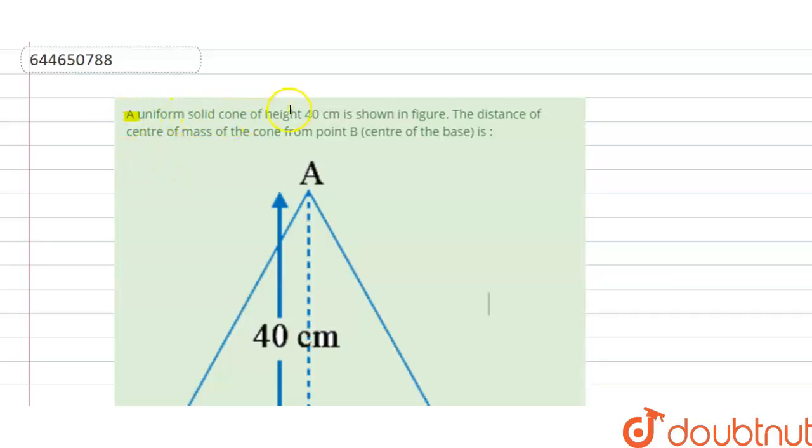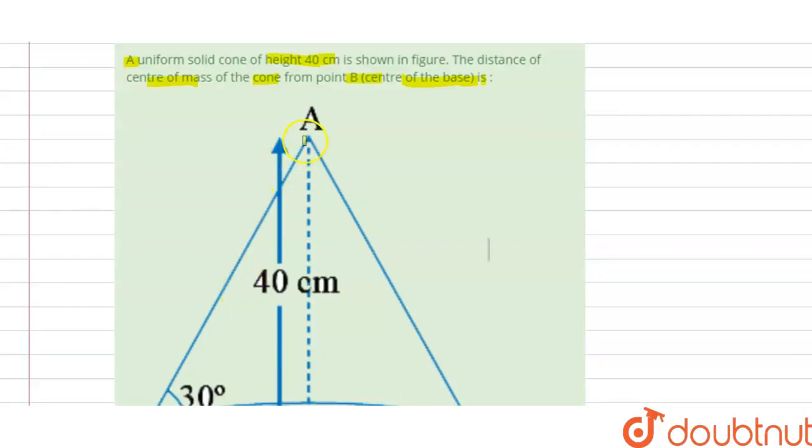A uniform solid cone of height 40 centimeters is shown in the figure. The distance of center of mass of the cone from point B, that is the center of the base, is what we need to find. So we have the cone here, this is point A, this is B, this is the center.